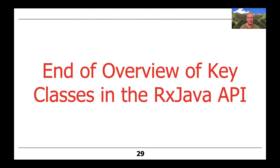That's the end of the overview of some of the key classes in the RxJava API. There are a couple of other ones as well, like Completable. We will talk more about Completable when the time is right, a little bit later in this course.